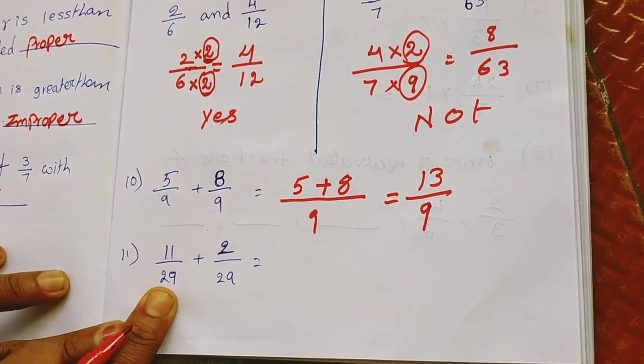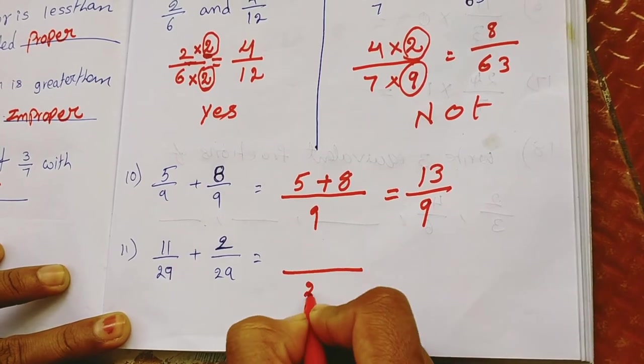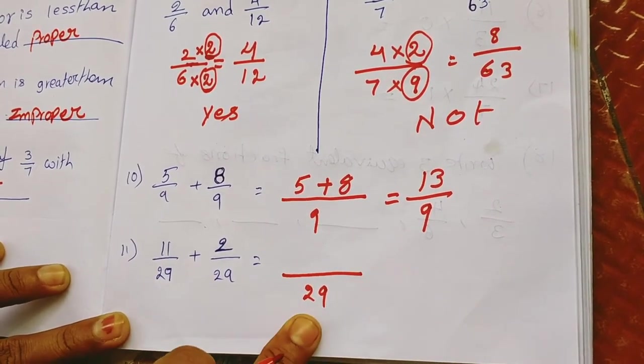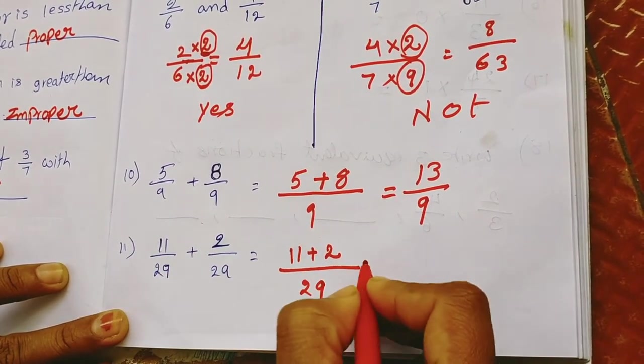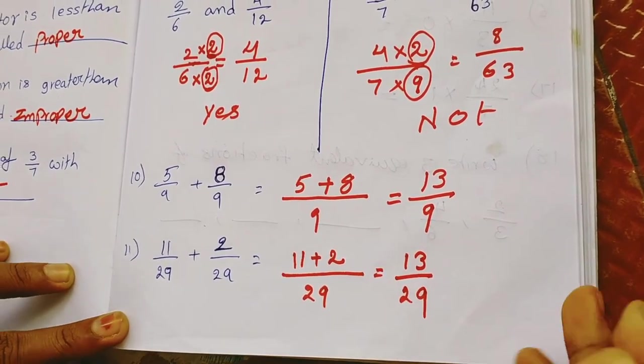Here also, look at here. Here also same, here also 29 and here also same, 29 is the denominator. So we take only 1, it has 1 denominator 29. And what are above parts? 11 plus 2. Simply we add above numerators. That means 13 by 29.